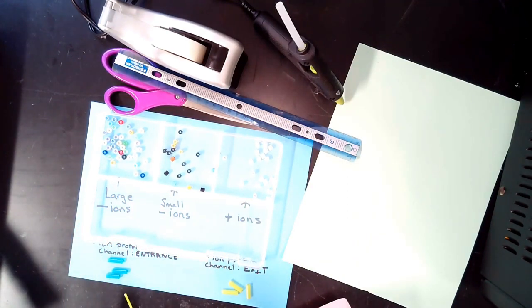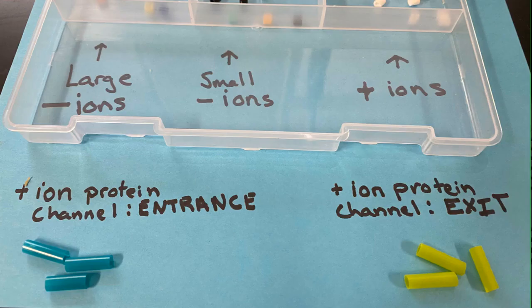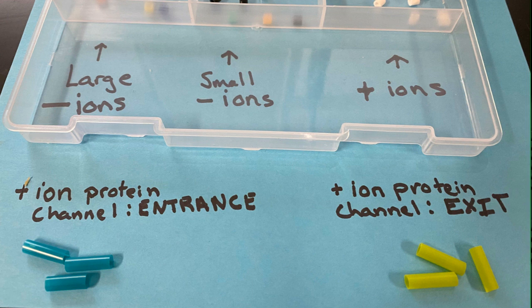The next thing you need are ion protein channels. They're just for the positive ions. So you have positive ion protein channels. These allow ions to enter the cell. So we're going to mark those entrance.